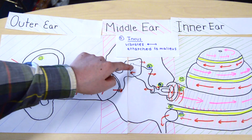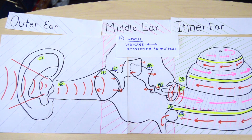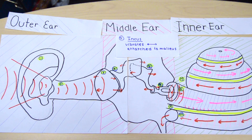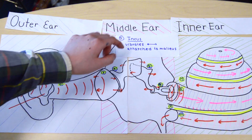The incus is the middle ossicle, which vibrates in response to the malleus vibrating, and also vibrates in a horizontal direction.